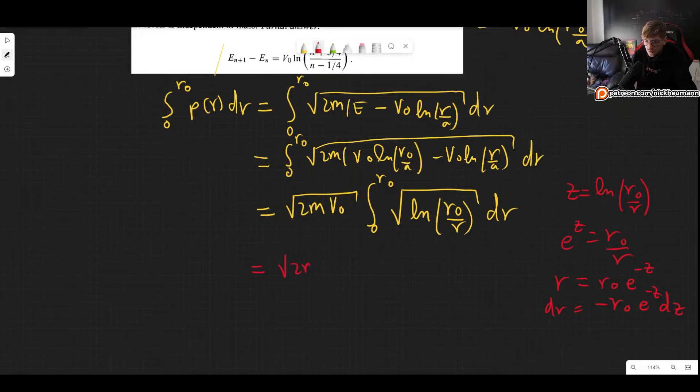So we have square root of 2m V0. What are the limits of our integral now? We have to plug in for Z. So our first limit the lower limit was R equals 0. In that case we get the logarithm of infinity and that means that we begin at infinity.